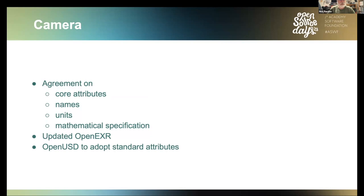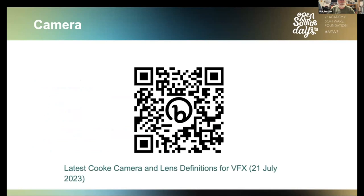We've reached agreement across core attribute names, units, and specifications. OpenEXR has been updated — version 3.2 is going to have the newly agreed-upon attributes and metadata incorporated in it. We expect also that Open USD will understand, where appropriate, the same metadata and specifications as has been formally adopted. There's a really well-prepared document from Cook where you can find the mathematics well presented and definitions extremely clear — a wonderful basis for the final output of that effort.